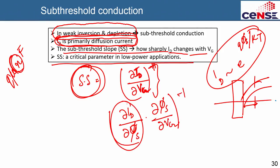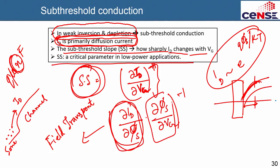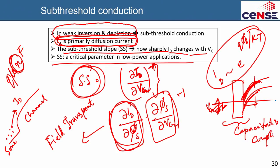The term d(ID)/d(ψs) is essentially the field transport factor — it captures how much drain current changes with band bending, related to electron injection from the source. The term d(ψs)/dVG represents how much the band bending changes with the gate voltage you apply — that is a capacitive coupling. It is an interplay of the gate oxide capacitance and the depletion capacitance. These two terms together give you the sub-threshold slope.